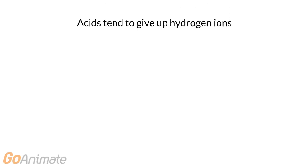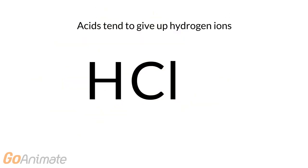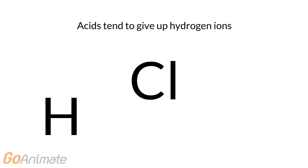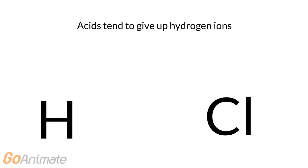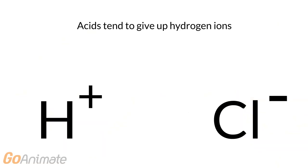Before we see how it works, let's review a little bit about acids and bases. Acids are molecules that tend to give up hydrogen ions. For example, hydrochloric acid dissociates into hydrogen ions and chloride ions. As a solution's hydrogen ion concentration increases, its pH goes down, making the solution more acidic.